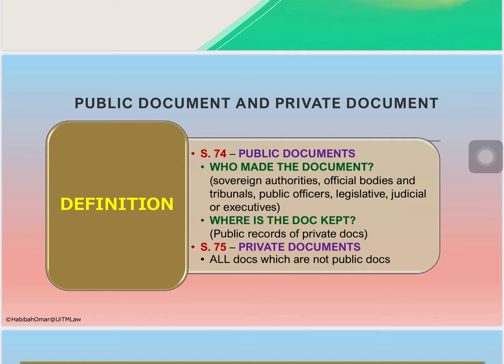If you read the scope of public document, you can categorize it into two criteria. First, who made the document — if a document is made by sovereign authorities, tribunals, official bodies, or legislative or judicial bodies, it is regarded as a public document. Documents produced by state or federal government are also public documents. Second, where is the document kept — if a private document is kept as a public record, then that private document becomes a public document.